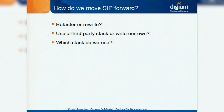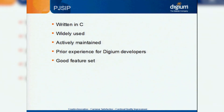Then came the debate of which stack to use. In our discussions, three came up as prime candidates. The first was Resiprocate, which is a C++ SIP stack. There was also Sofia SIP, which is the SIP stack originally developed by Nokia but maintained these days by the FreeSWITCH developers. And the third was PJSIP. In the end, we chose PJSIP as our SIP stack of choice.